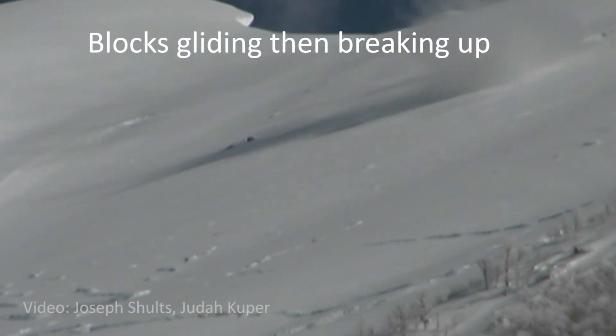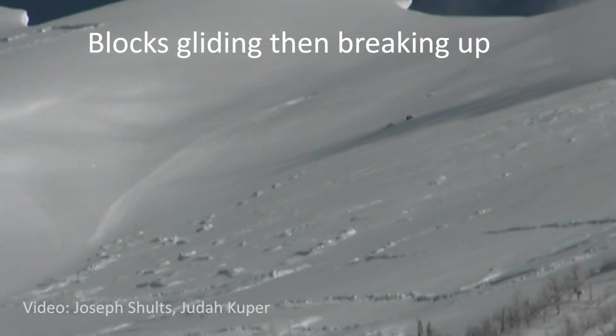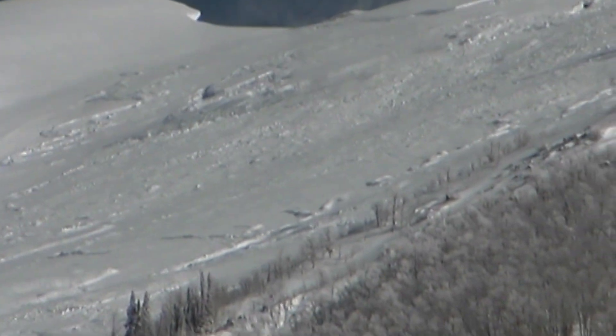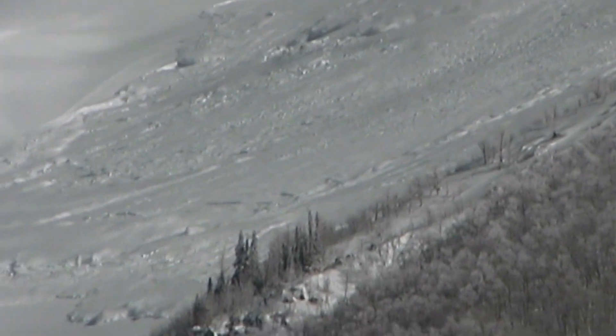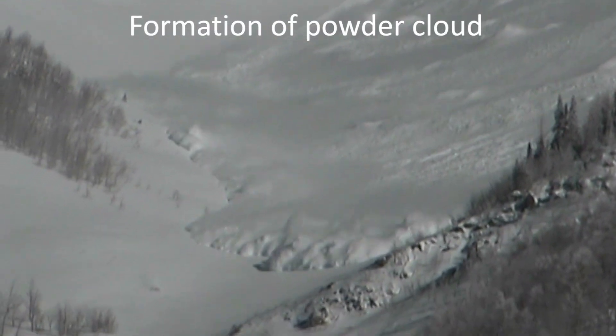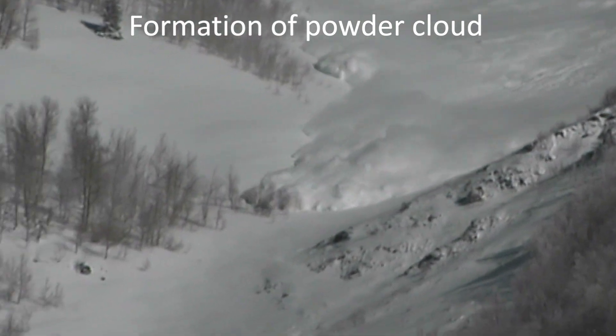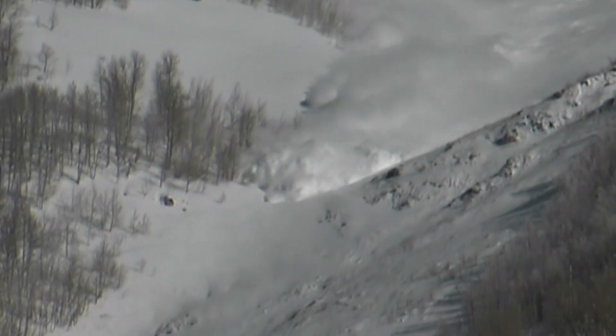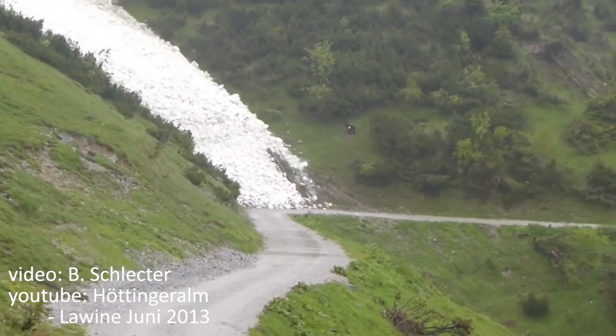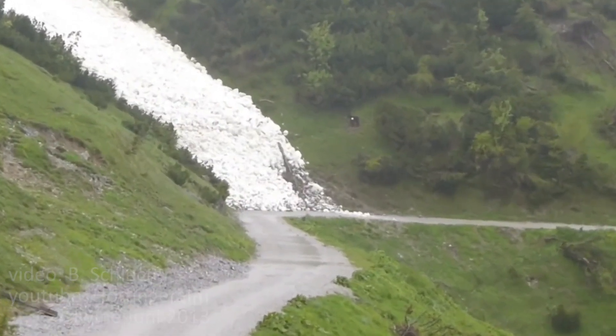Slab avalanches start out as gliding blocks which then break up into smaller and smaller lumps. At about 10 meters per second, a powder cloud of suspended particles starts to form above a dense flowing core but only if the avalanche is dry. Wet avalanches do not form a powder cloud. Also, they tend to follow gullies more than fast dry avalanches.